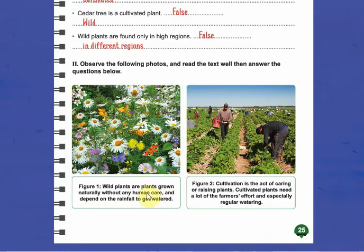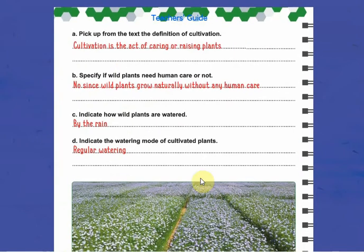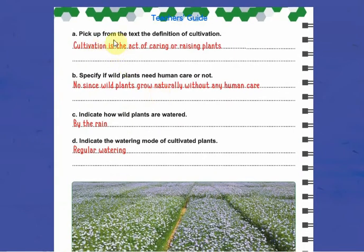Now in question two, you have to read these texts carefully and then answer the questions on the next page. Pick up from the text the definition of cultivation — we can say that cultivation is the act of caring or raising plants, or the act of planting plants. Specify if wild plants need human care or not — we can say no, since wild plants grow naturally without any human care.